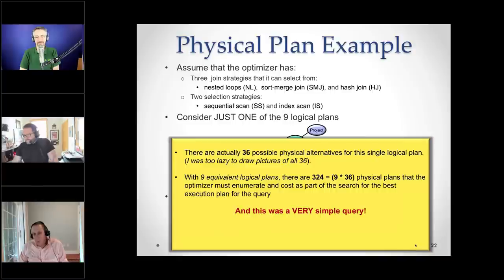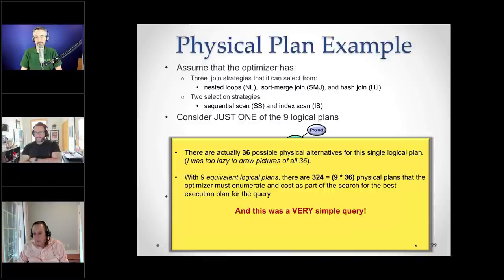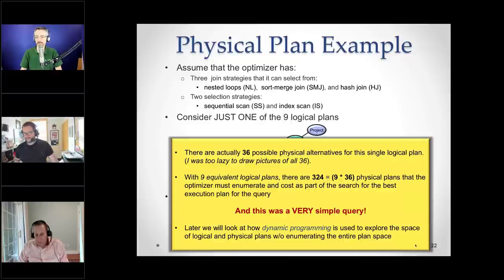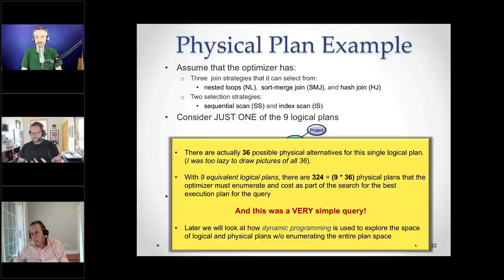This goes back to Michelle's question. We take each logical plan, try all sorts of physical plan alternatives, and we're left with 324 physical plans to cost — then we pick the best one. This is a really simple query: two joins, a couple of selections, and a projection. The technique used is dynamic programming. The actual algorithm is really complicated — SQL Server happens to be a top-down memo-based optimizer. But the idea is it's okay to enumerate 324 plans for a simple query, but that TPCH query with six or seven tables had 22 million logical plan alternatives, let alone physical plans.